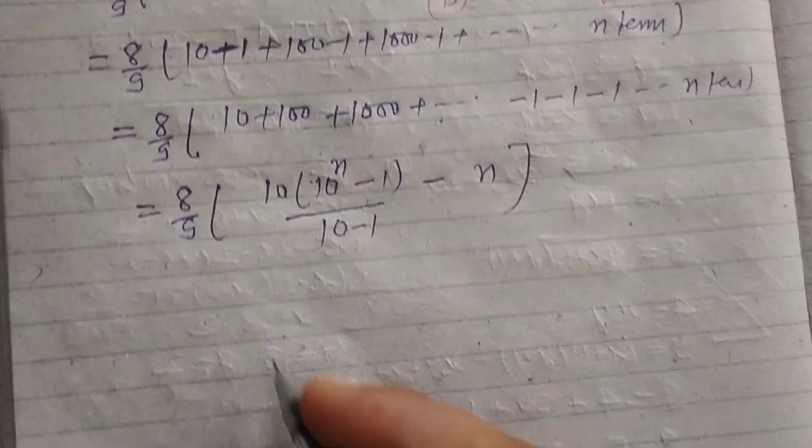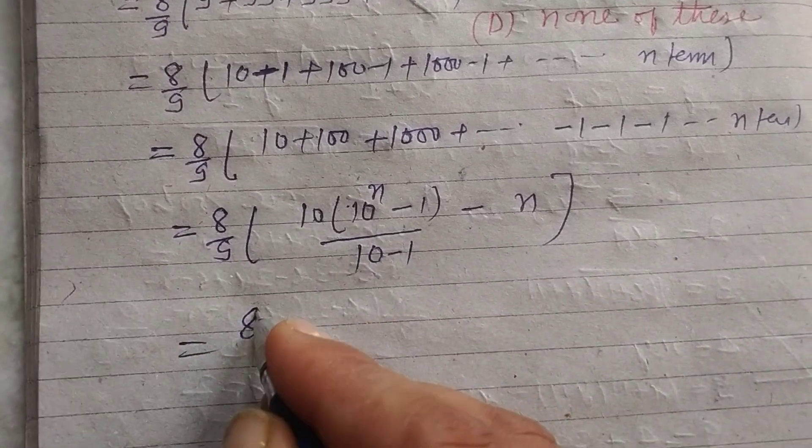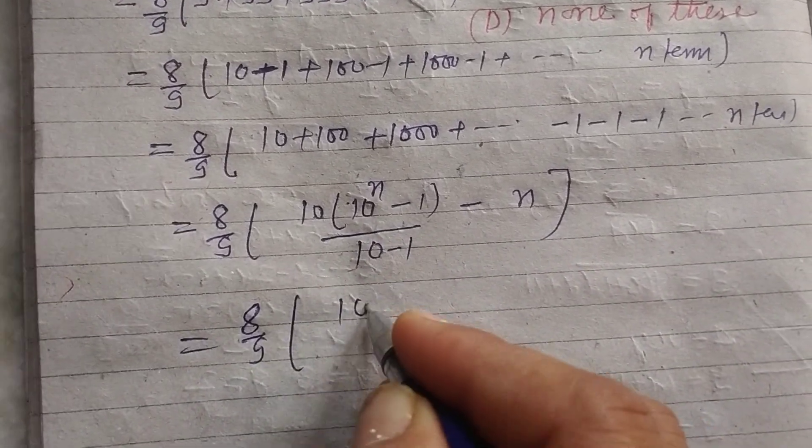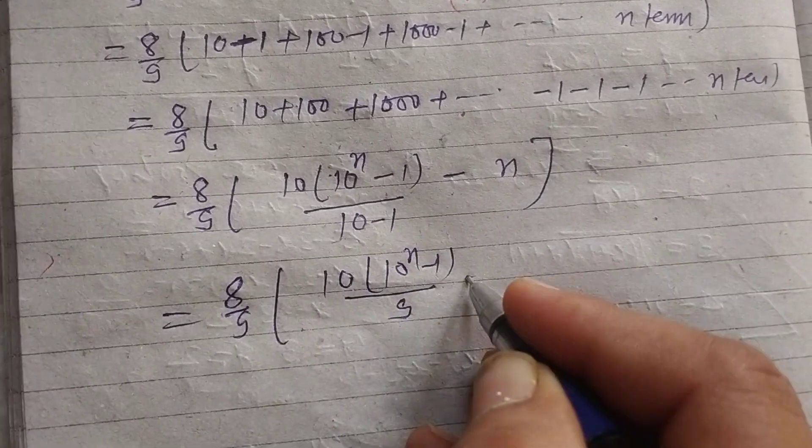Minus n. Sum of minus 1, minus 1 up to n terms is minus n. So 8 upon 9, this is 10 times 10 to the power n minus 1 upon 9 minus n.